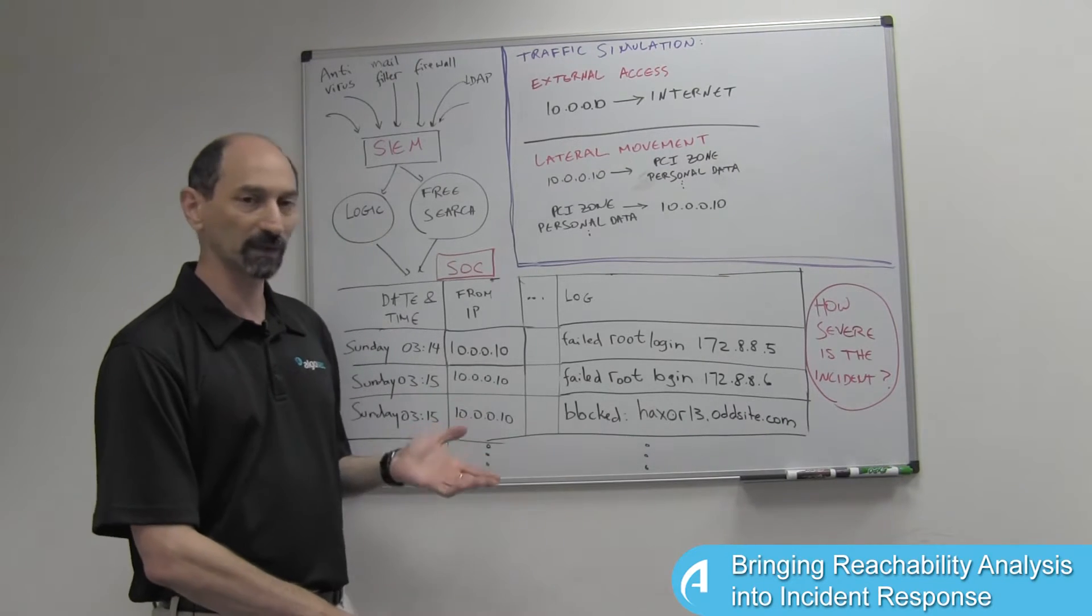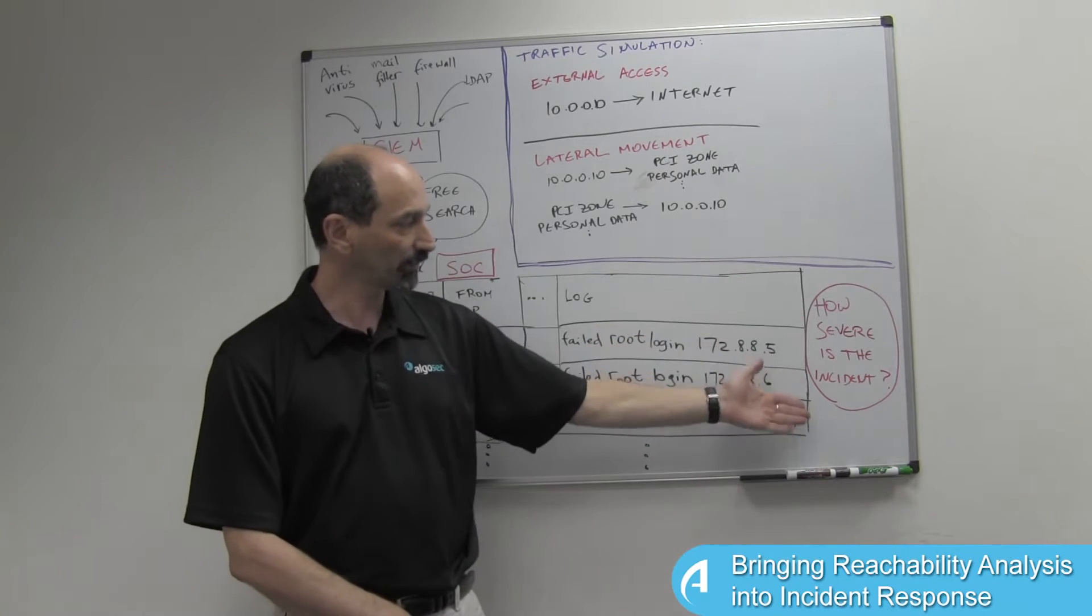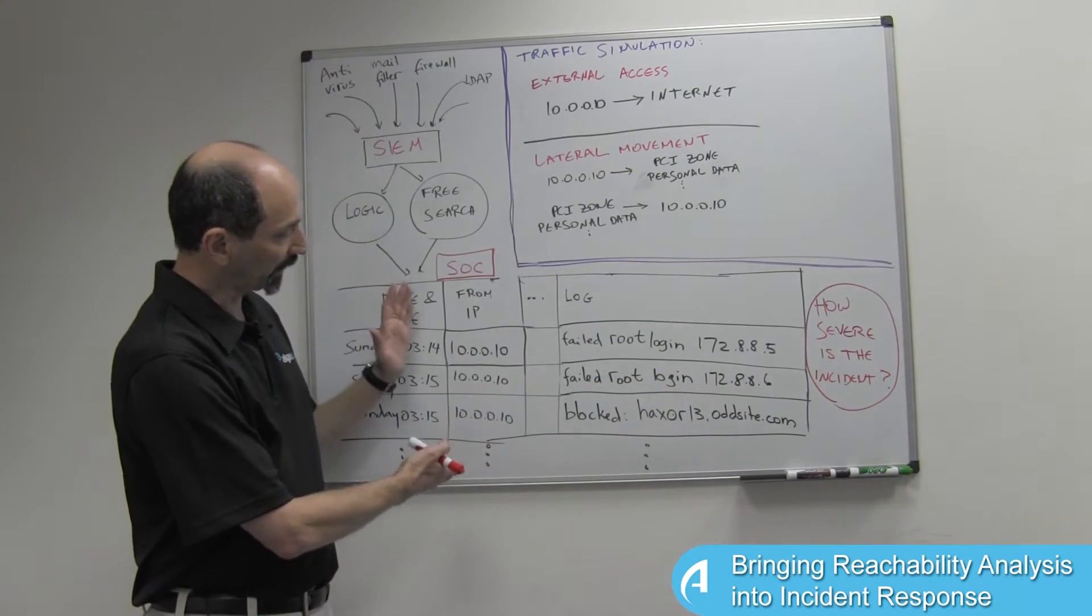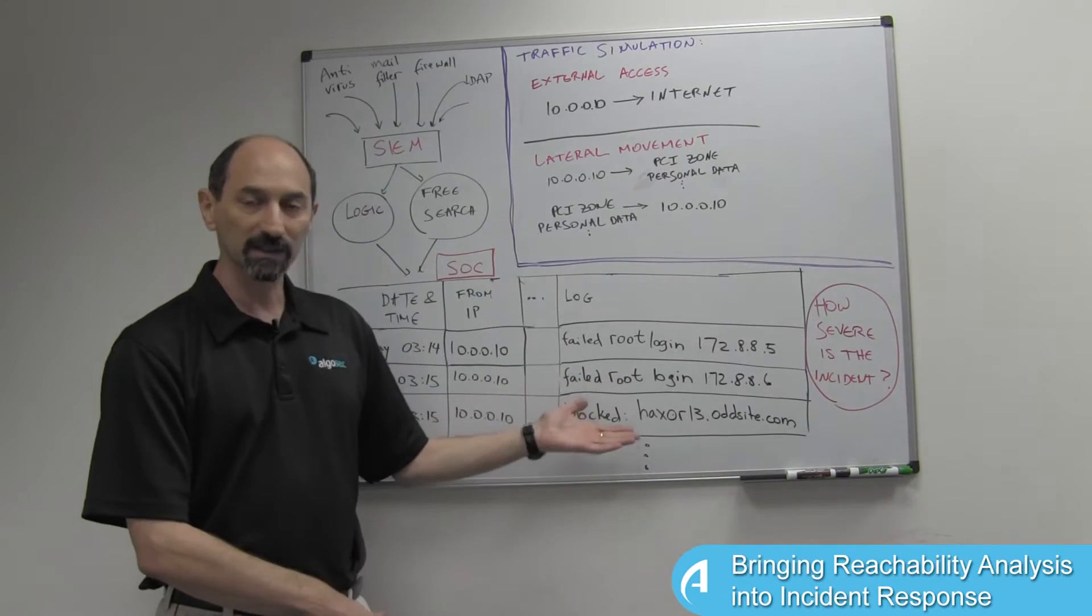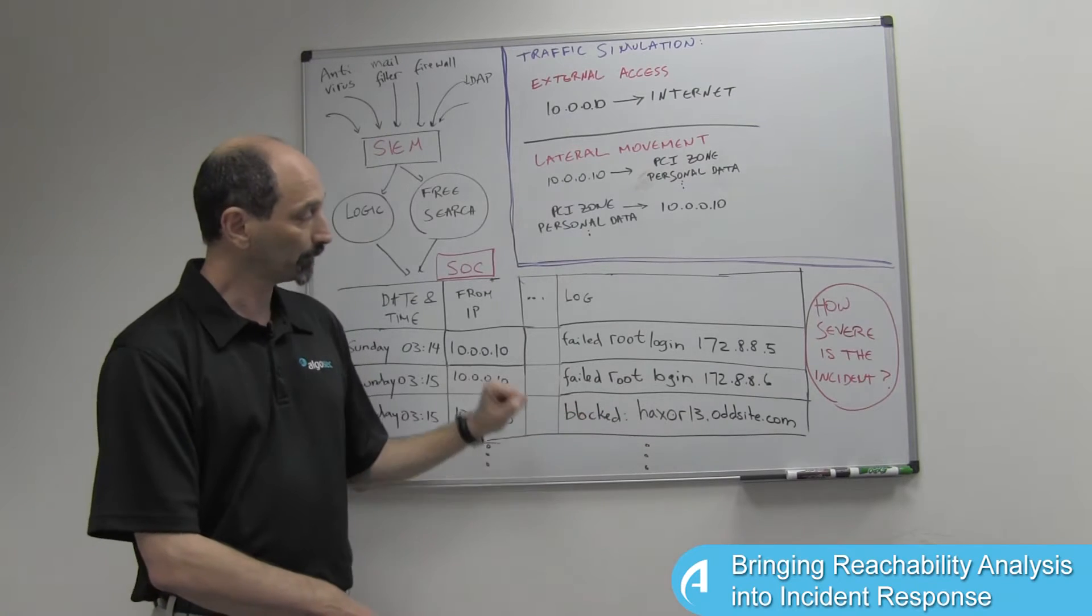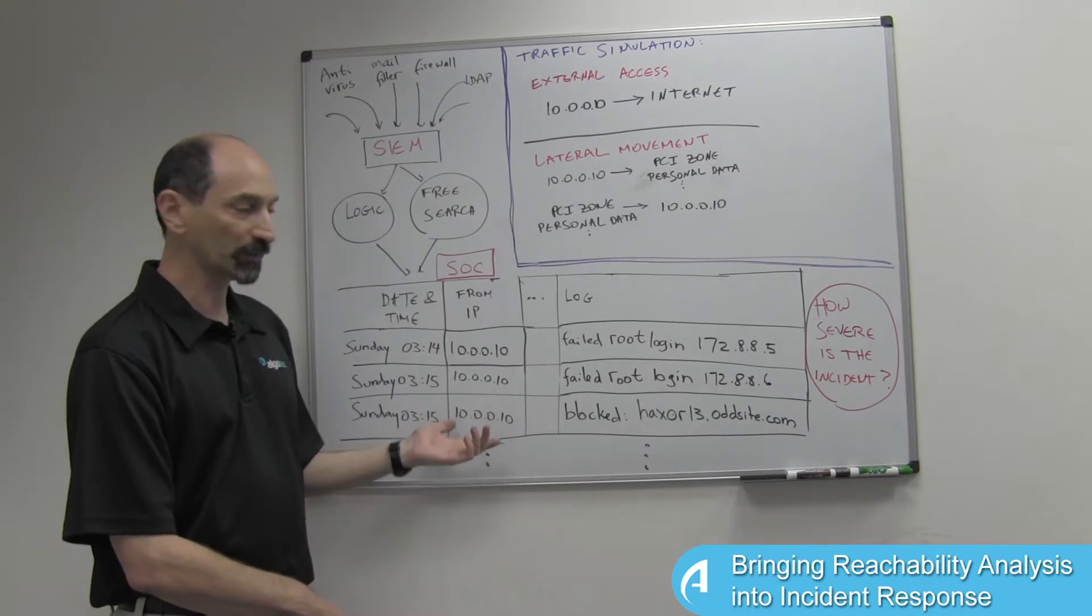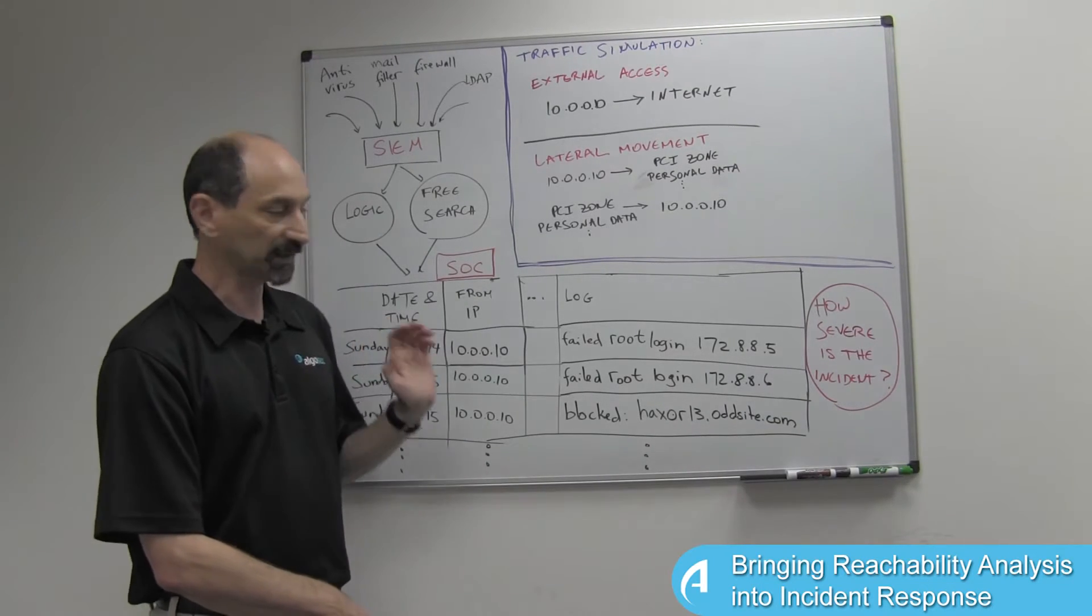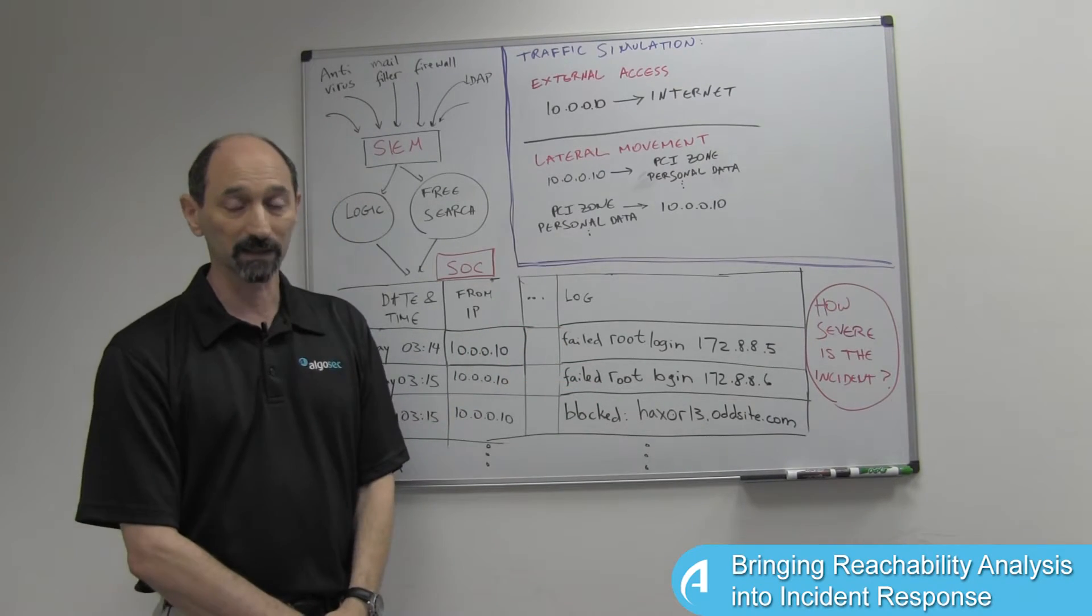Today we'll talk about a different aspect of incident response, and this is identifying how severe the incident is. When the SOC people look at the information available to them, there's clear evidence of certain things going on, malicious actions taken by the software or the person connected to the infected system. But that's not all we need to know in order to identify how severe the threat really is.